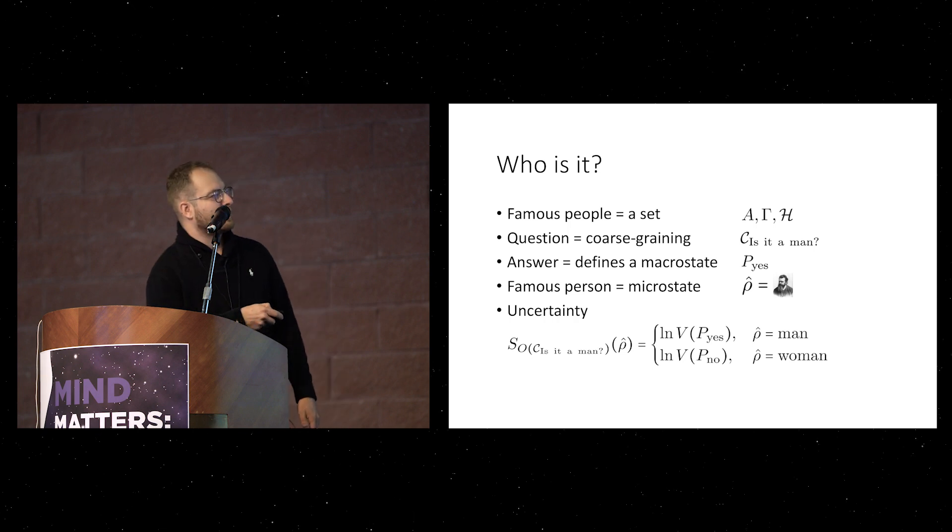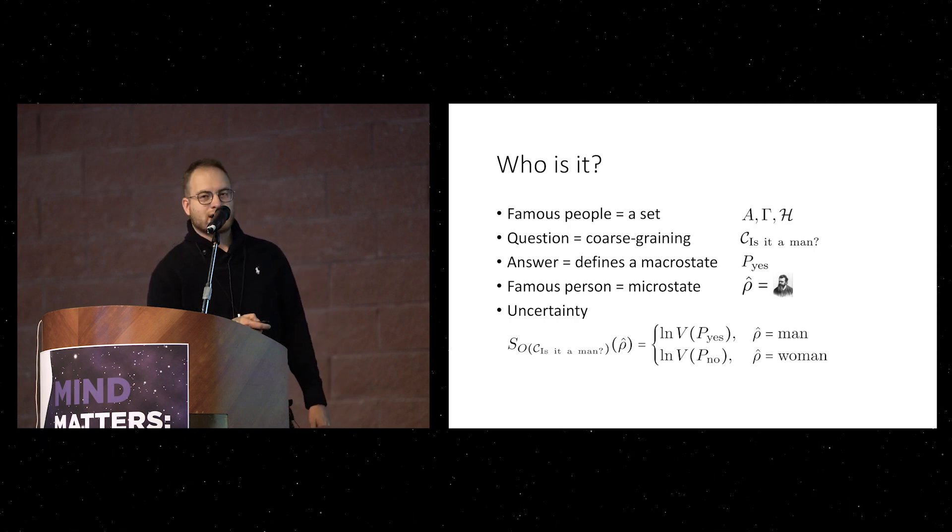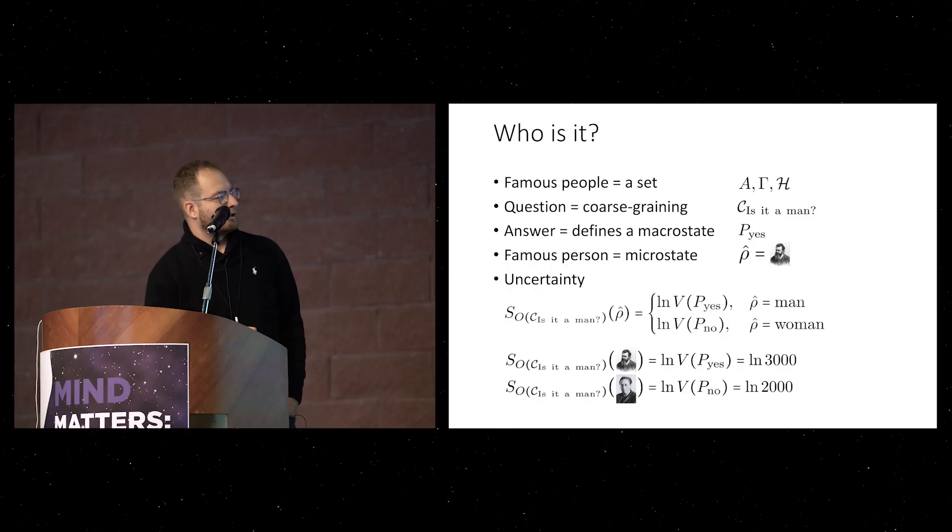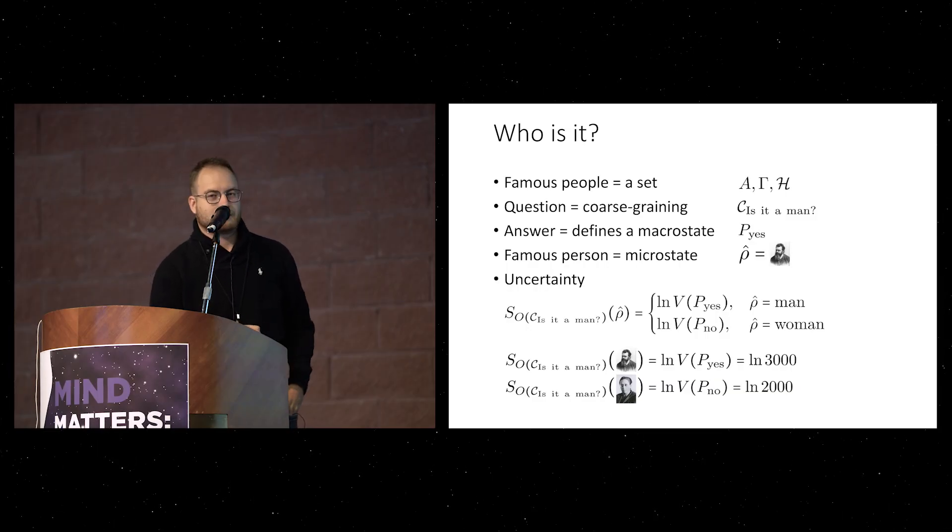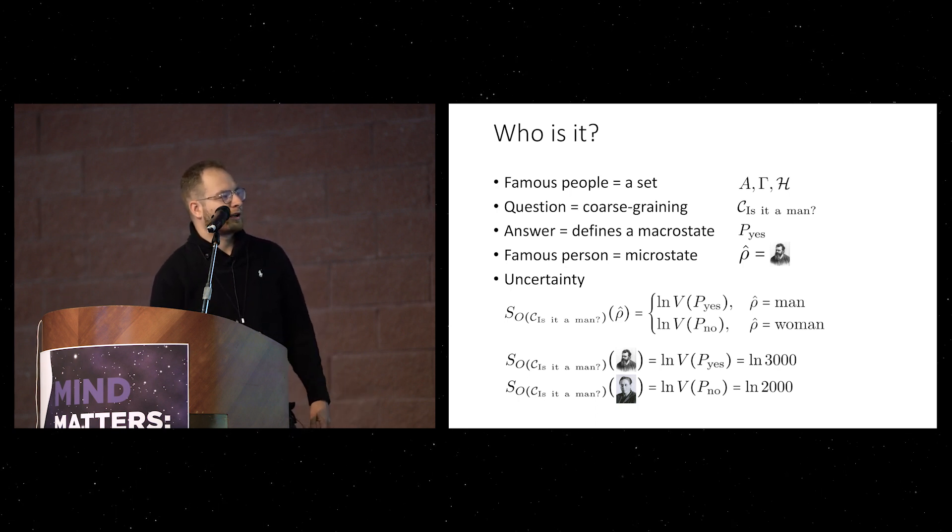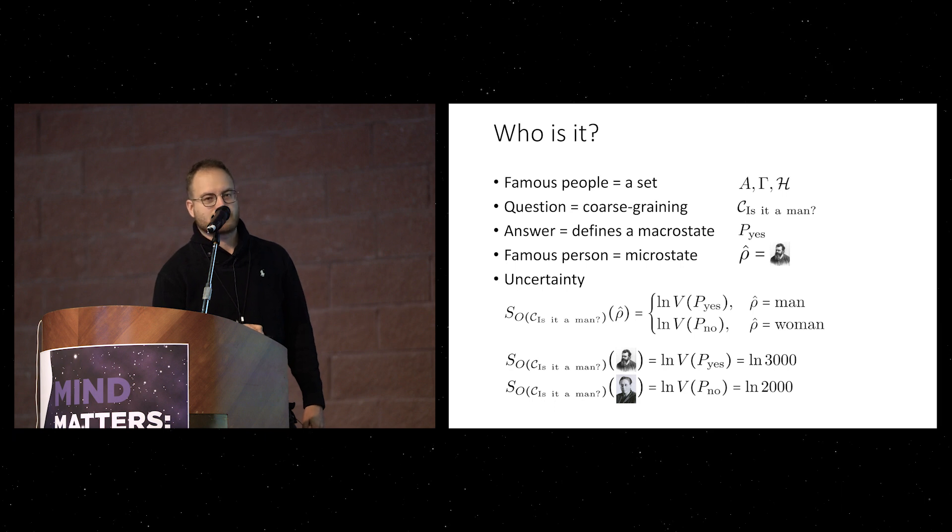So if you ask, is it a man? And I say yes, then I associate an entropy with it, that for some good mathematical reasons is a logarithm. And I take the logarithm of the volume of this microstate, and the volume in this simple example is just the number of people that I still have in mind. So if the answer is a man, then I have this logarithm of the volume, and I have another one. So if instead I was thinking about a minority, and you ask me, is it a man? Then obviously my uncertainty would be a logarithm of 2,000 instead of a logarithm of 3,000.